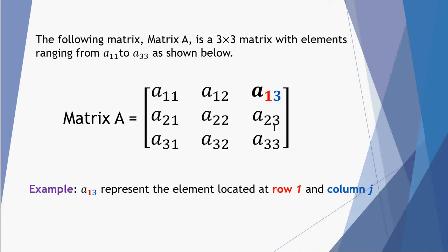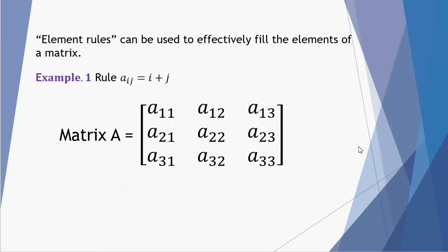So here A 2 3 represents an I of 2 and a J of 3. An example would be A 1 3: first row, third column. Now let's look at some possible rules. The first example is where the element A IJ can be determined by adding the row number I and the column number J. We can now work out every one of these element values following this rule.